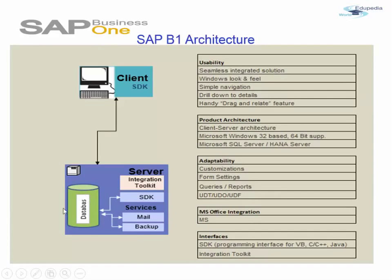Let's have a look over SAP Business One architecture. There is a client, there is a database, there is a server, there is an integration toolkit, and there are services like mail and backup. This is a simple depiction of the actual SAP Business One architecture.